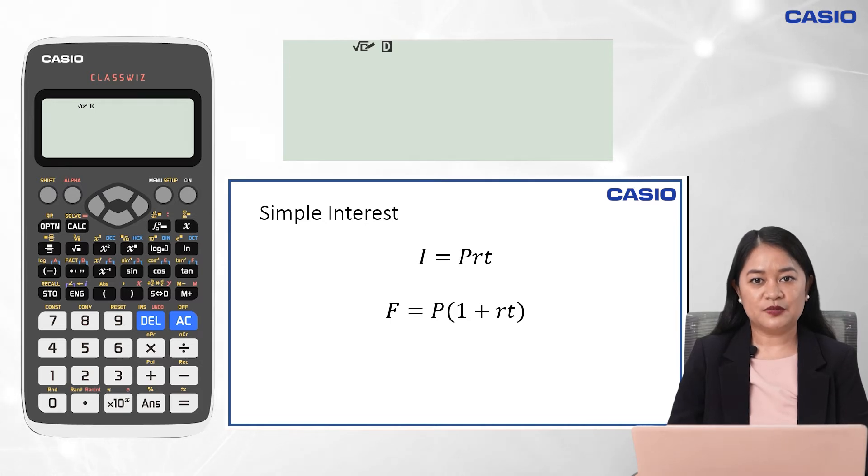Now, not at all times the unknown is either the interest or the maturity value. It can be the principal, the annual interest rate, or the period of time in years. So this video will help you to solve easily any unknown.